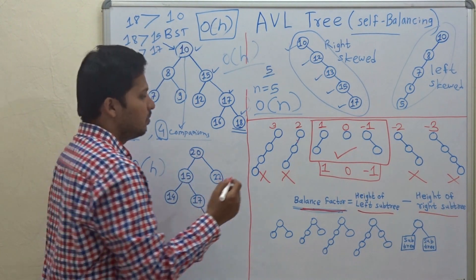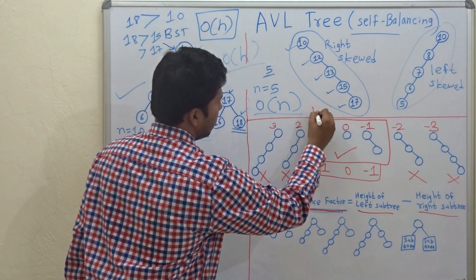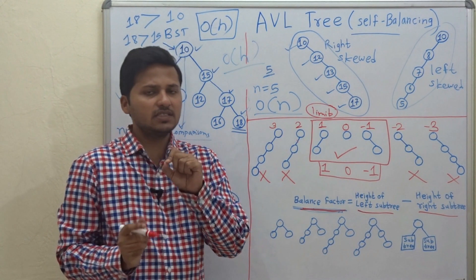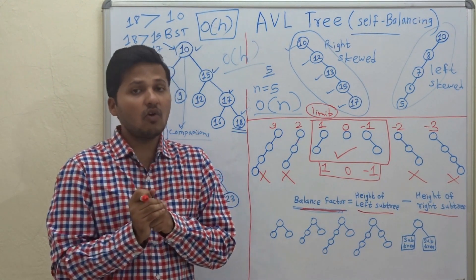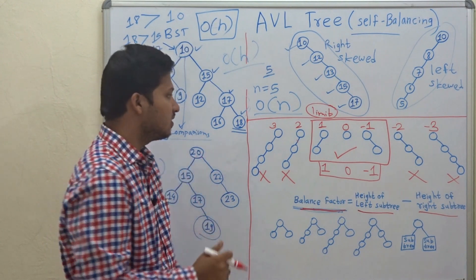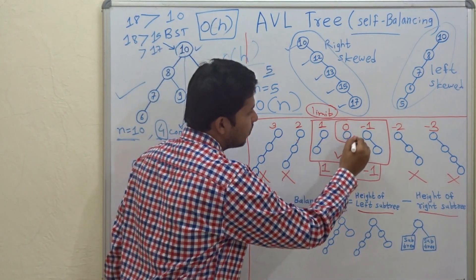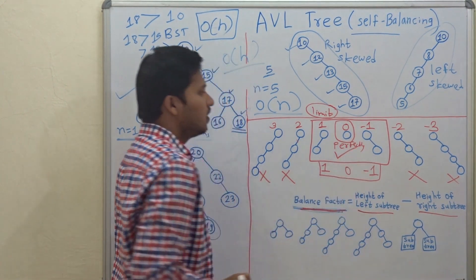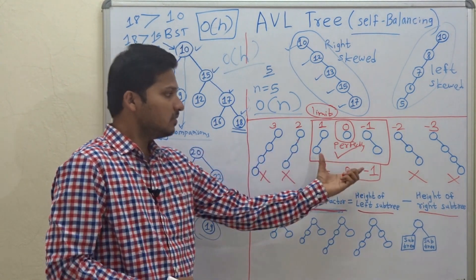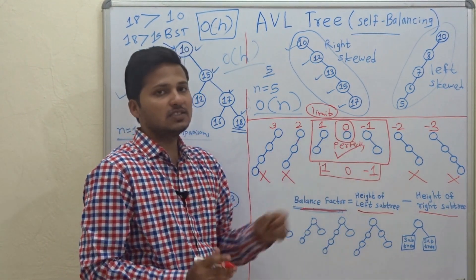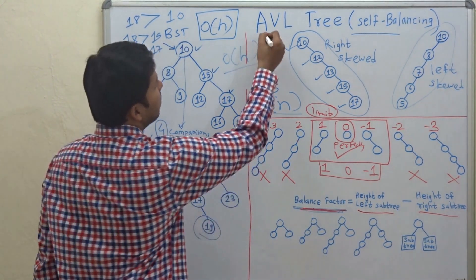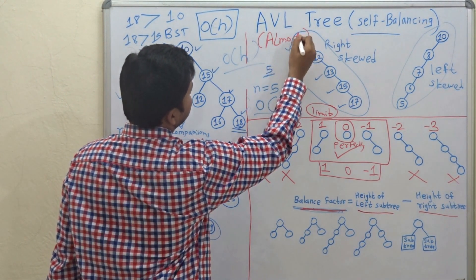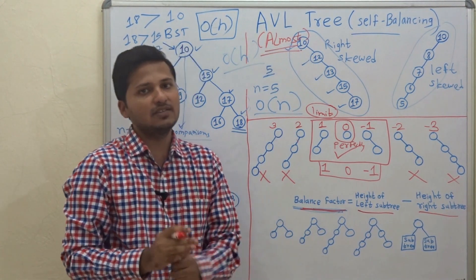The reason for keeping balance factors as 1, 0, or -1 is that we want to limit the skewness of the binary search tree. A BST is called perfectly balanced only if all nodes have balance factor 0. An AVL tree, with balance factors of 1, 0, and -1, is called almost balanced — not perfectly balanced.